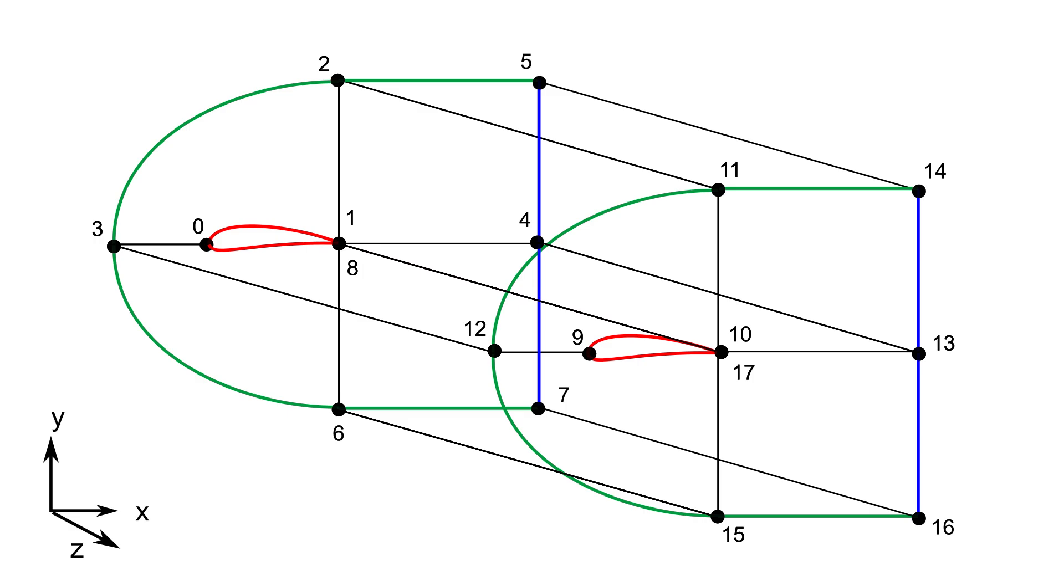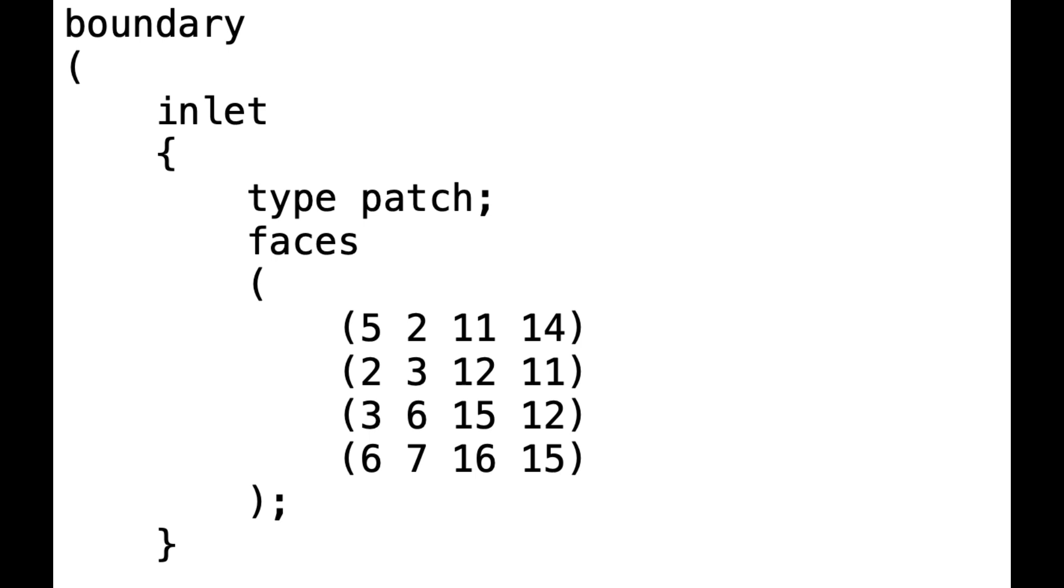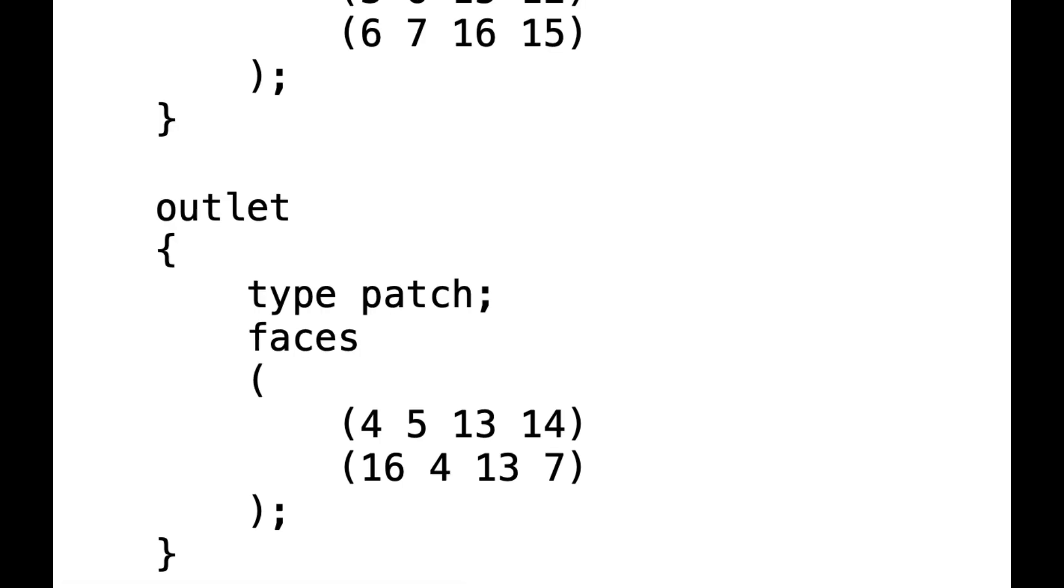Now that we have finished the edges, let's move on to the boundary definitions. Here each group of faces will represent a physical boundary in our CFD domain. For example, the green faces in our sketch correspond to the inlet. To define them we simply list the corner points of each face in order. We will follow the same approach for the outlet, interface and finally the airfoil wall. By organizing these patches clearly, OpenFOAM will understand where fluid enters, where it exits and which surface acts as walls.